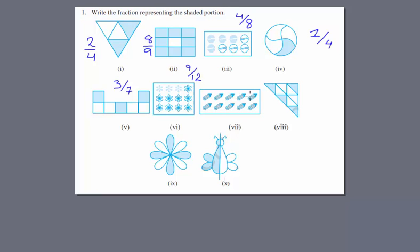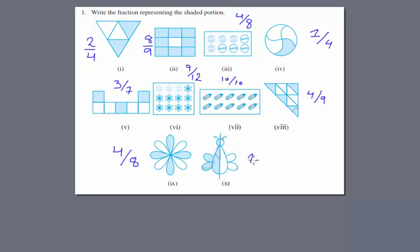Here we see all portions shaded, so we have ten over ten. Here we have four out of total nine. Next we have four out of total eight — this picture has half shaded, therefore one over two.